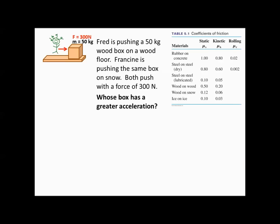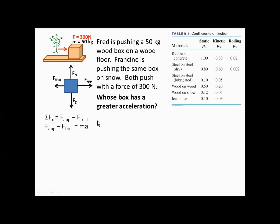Let's look at Fred and Francine's boxes and figure out which has greater acceleration. We'll use a chart of coefficients of friction for common objects. For Fred's box, in the x-direction, the sum of forces is the applied force minus the force of friction, which equals mass times acceleration. The force of friction equals the coefficient of friction times the normal force. Since Fred's box is in motion and not on wheels, we use kinetic friction.